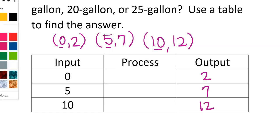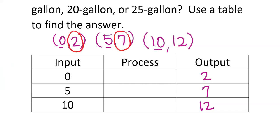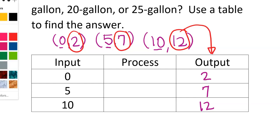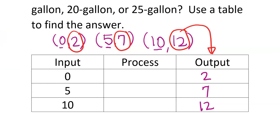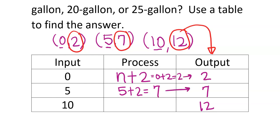Next, figure out the process. From input zero to output two, maybe they're adding two. Zero plus two equals two — yes. Does five plus two equal seven? Yes. Does ten plus two equal twelve? Yes. So the rule is: add two to the combined fish length to get the capacity.